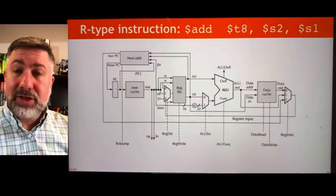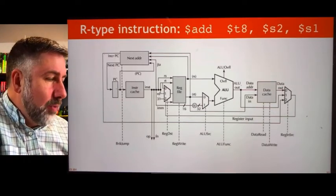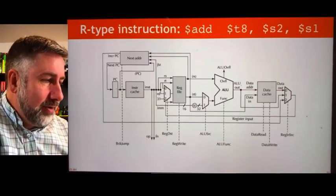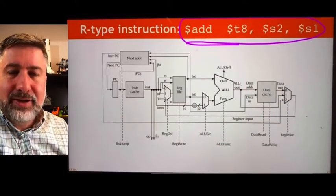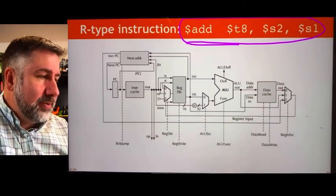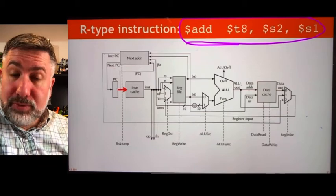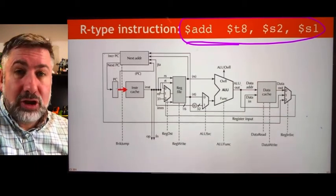Here's how this works on an actual datapath. We have the full datapath here and we're going to get this operation executed. We're going to add from s2 and s1 and put the result into t8. First, the program counter addresses the instruction cache. The instruction cache loads that instruction.